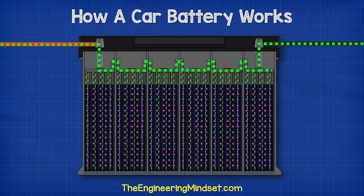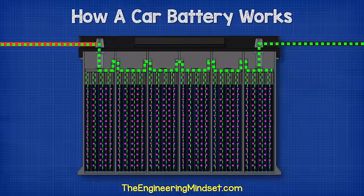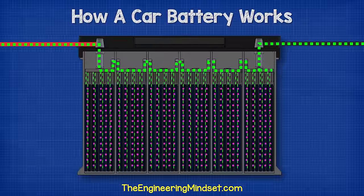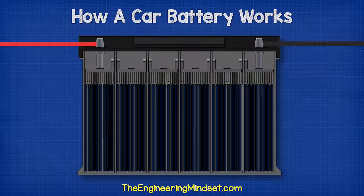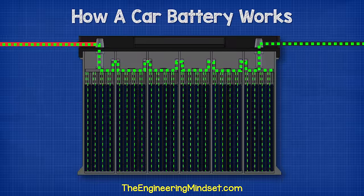This provides the hundreds of amps of current to start the motor and also provides the voltage to power the lights — and is then recharged by the alternator.